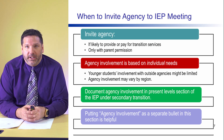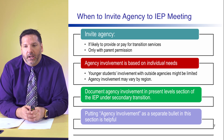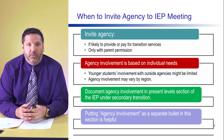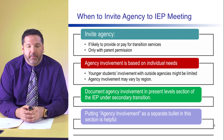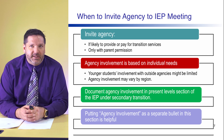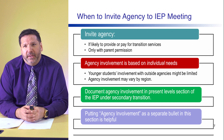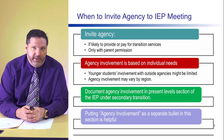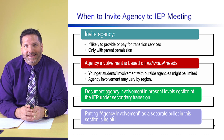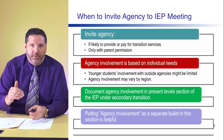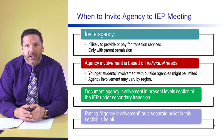Agency involvement may be somewhat limited for younger students. For example, with the Office of Vocational Rehabilitation (OVR) at age 14, they may provide more informational types of services. As the student becomes older and enters their junior or senior year, they may become more actively involved with OVR. Agency involvement also varies by region, especially with intellectual disability services and mental health services that are county-based throughout Pennsylvania. It's important to document agency involvement in the present education level section of the IEP under secondary transition services, using a bullet labeled 'agency involvement' to list what that involvement looks like for that IEP year.